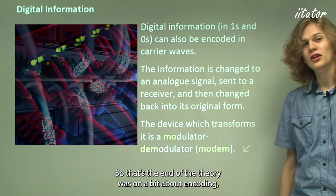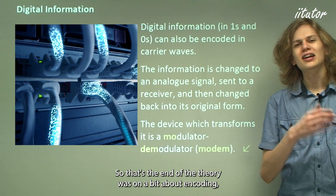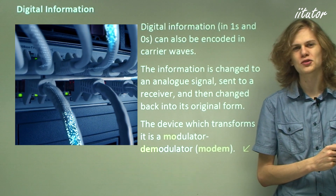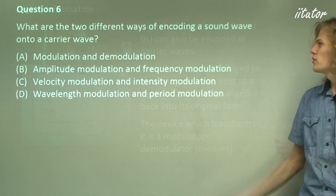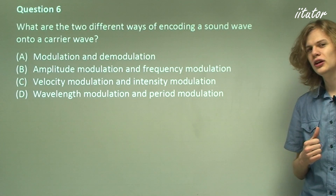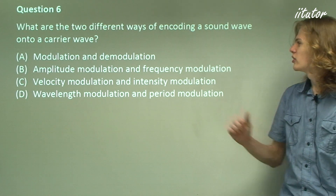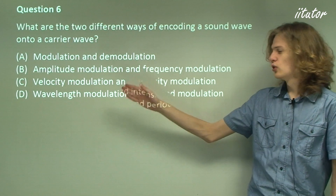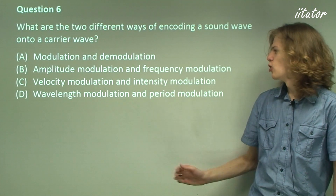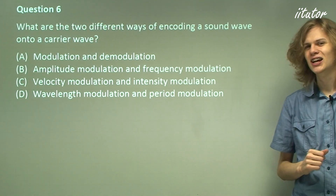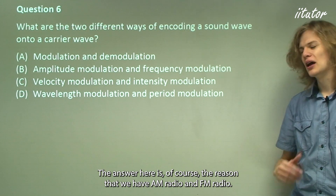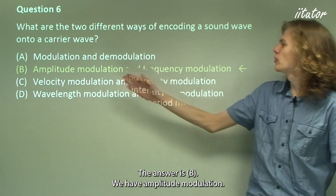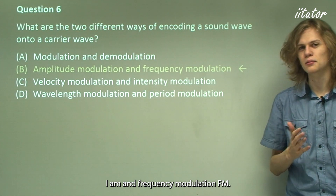That's the end of the theory on encoding sound waves into electromagnetic waves. Now let's go on to some questions. What are the two different ways of encoding a sound wave in a carrier wave? The answer is B: amplitude modulation and frequency modulation — which is why we have AM radio and FM radio.